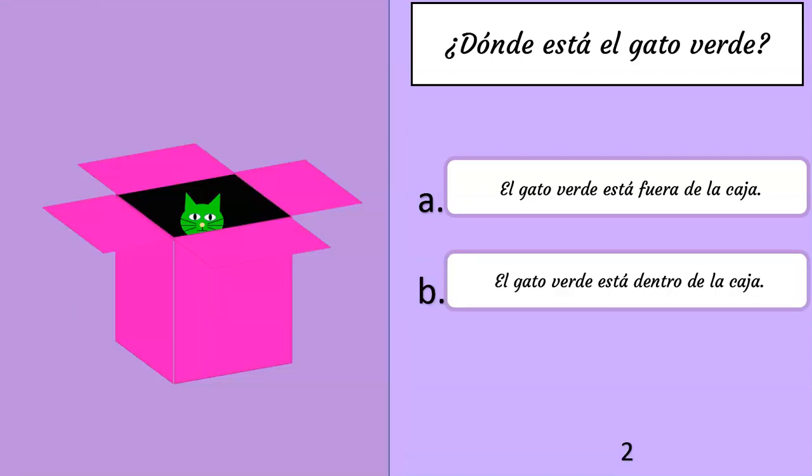¿Dónde está el gato verde? A: El gato verde está fuera de la caja. B: El gato verde está dentro de la caja. The correct answer is B: El gato verde está dentro de la caja.